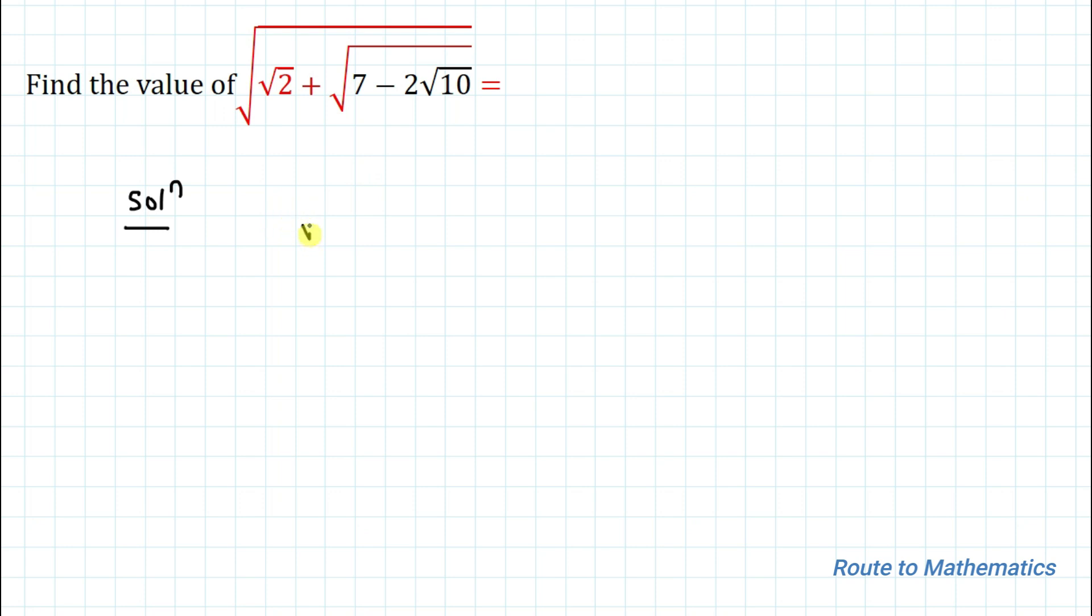The given question is root 2 plus 7 minus 2 root 10, the whole root over. Okay, as it looks very complicated, let's start solving from here.